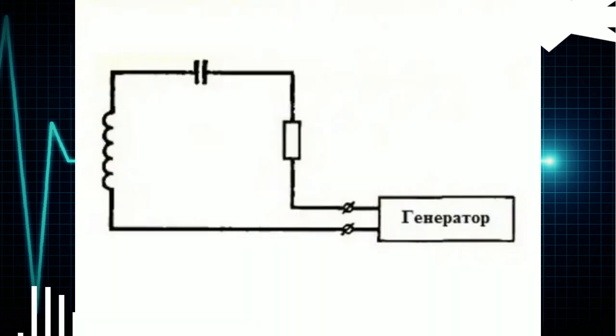Instructions Step 1. Make the simplest device for obtaining electromagnetic oscillations by connecting an inductor, a capacitor, and a resistance (resistor) to the generator terminals.